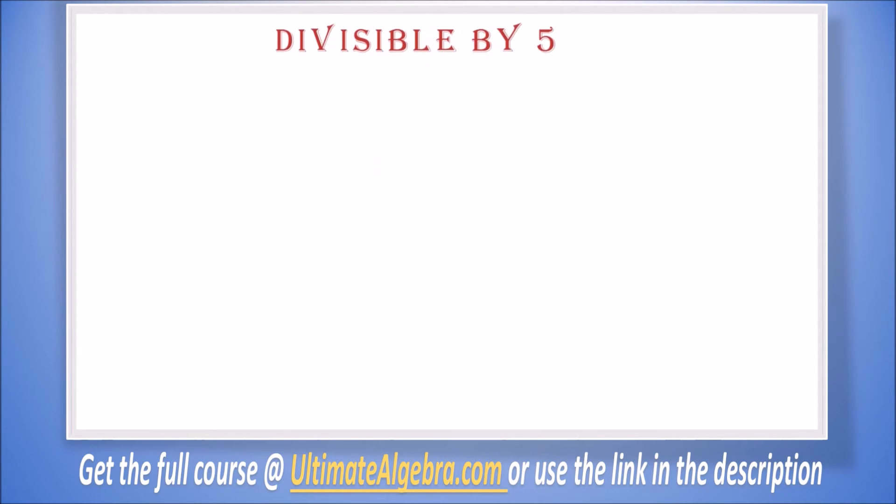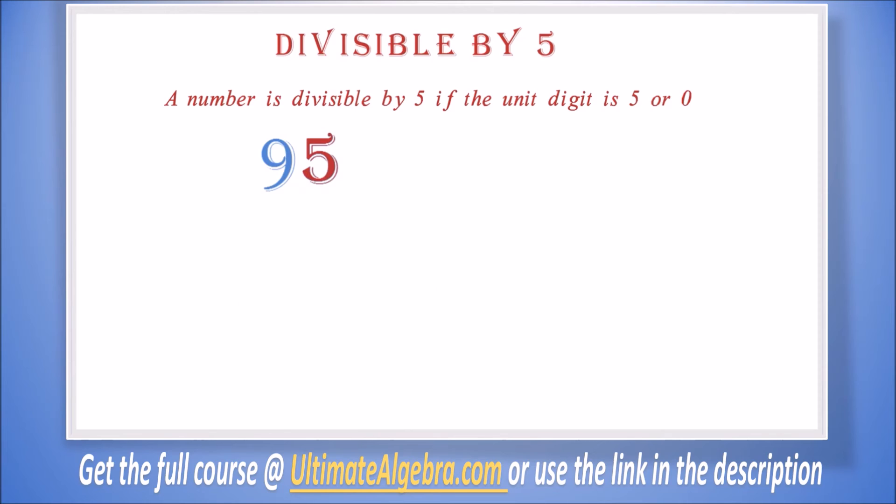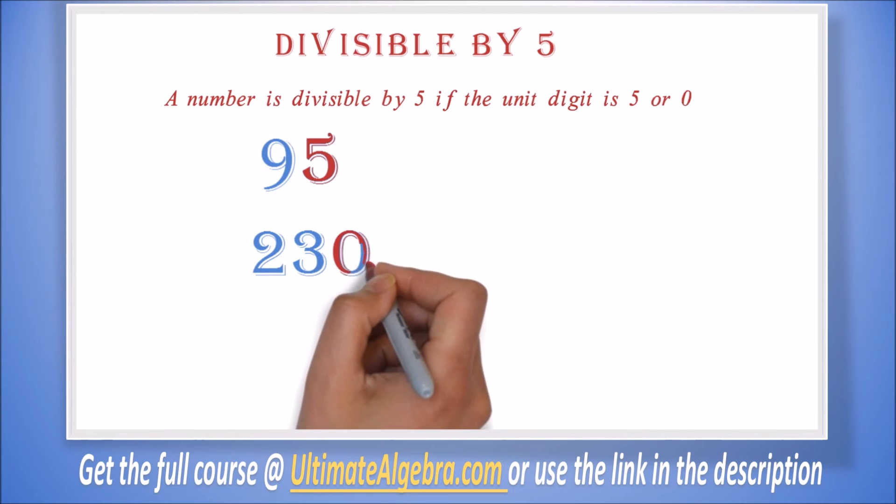Divisible by 5: A number is divisible by 5 if the unit digit is 5 or 0. For example, 95 is divisible by 5 because the unit value is 5. Again, 230 is divisible by 5 because the unit digit is 0.